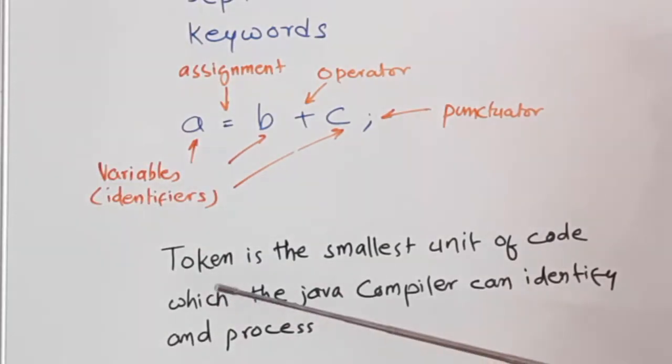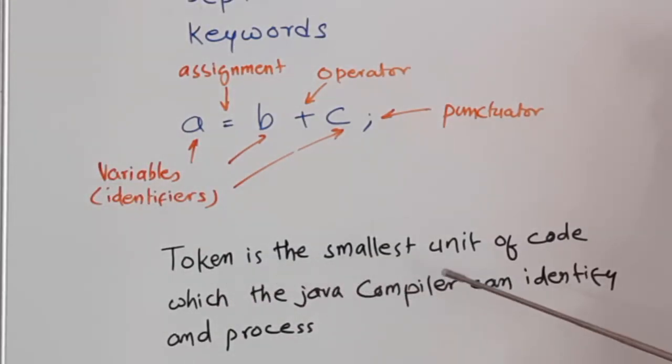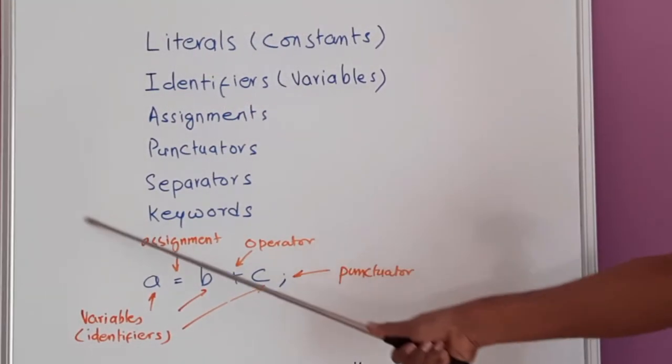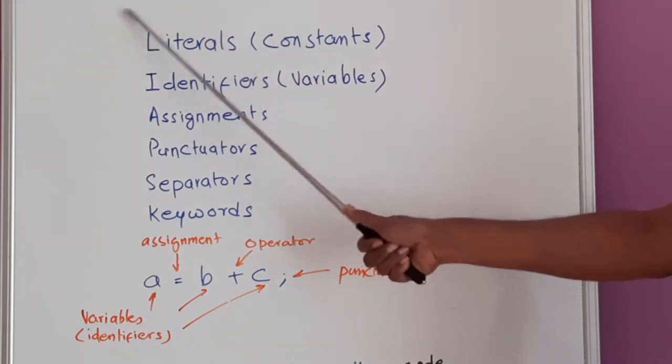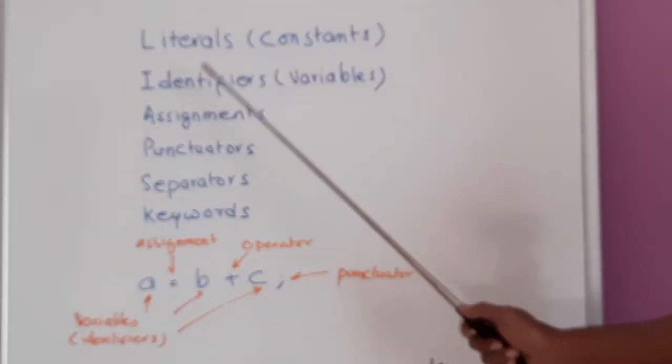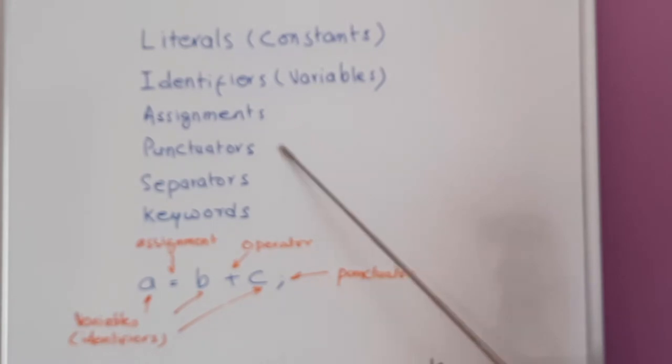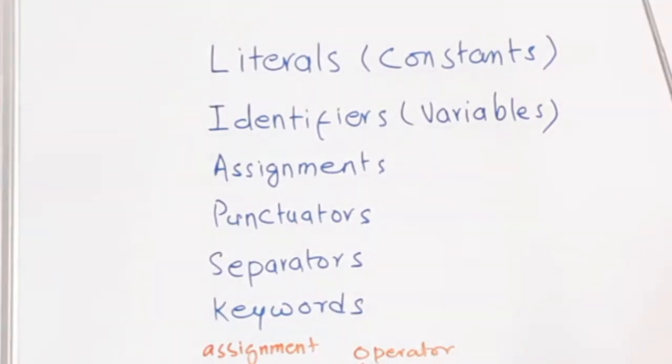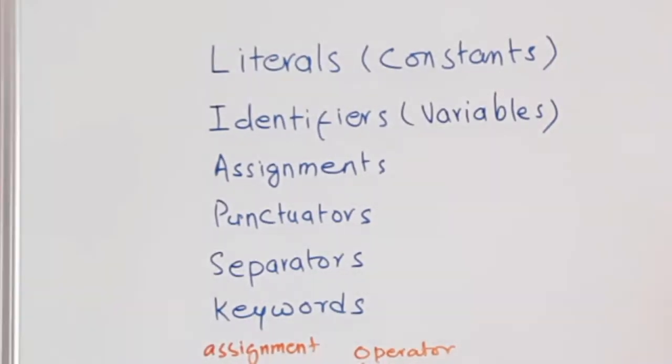Token is the smallest unit of code which the Java compiler can identify and process. So all the different tokens are nothing but the Java character set. There are literals or constants, there are identifiers or variables, there are assignments, punctuators, separators and keywords. Now, let us see all these different types of tokens in detail.